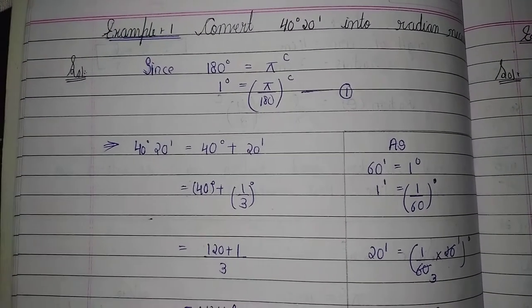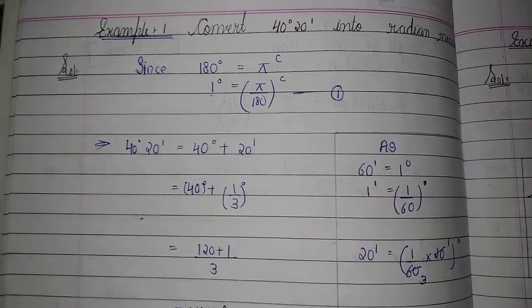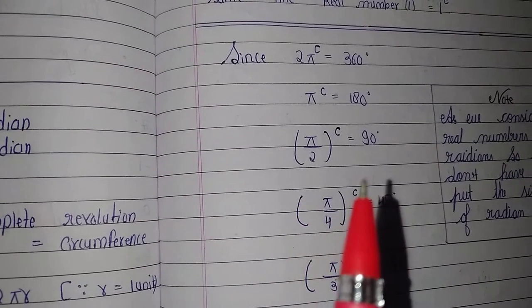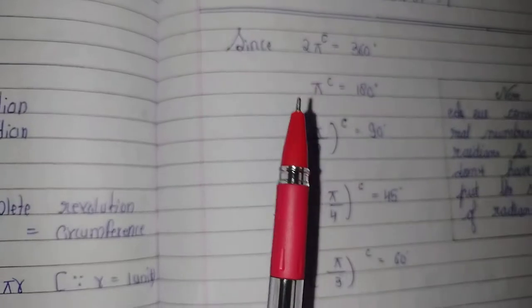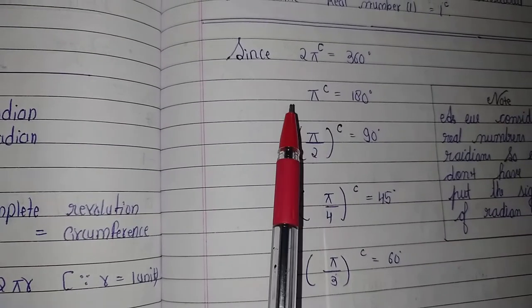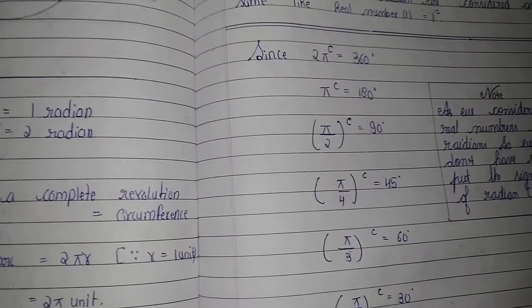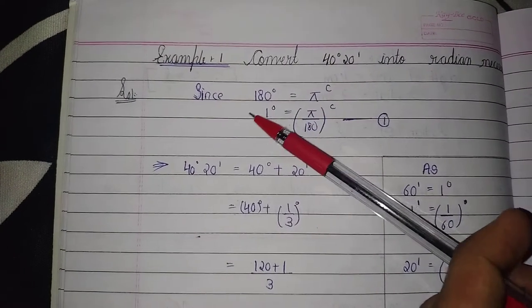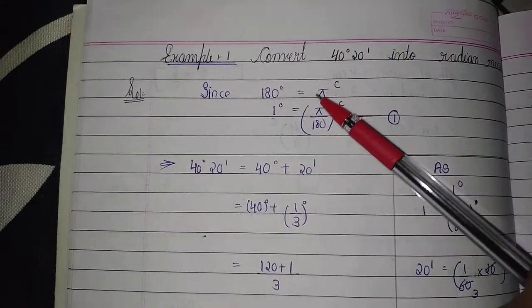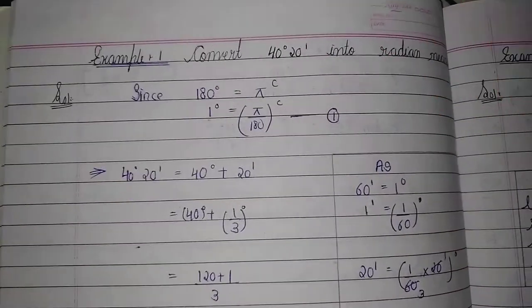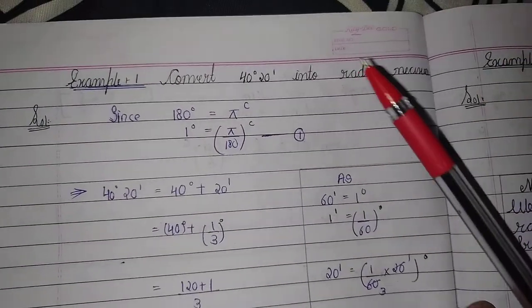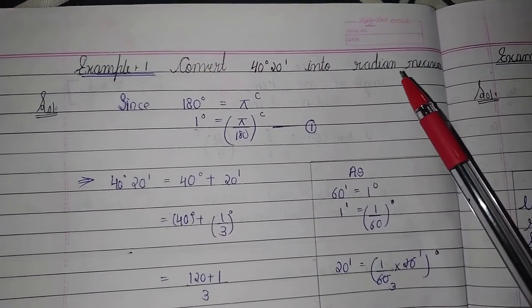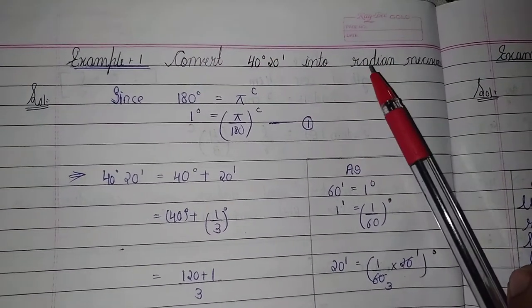In the previous video introduction, we learned that 2π radian is equal to 360 degrees, and π radian is equal to 180 degrees. So we use this to convert here: 180 degrees is equal to π radian.